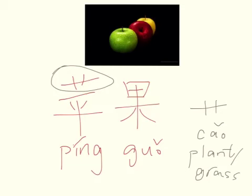Every time you see this little cross — it looks like a clown's eyes to me — every time you see this, you know it's fruit, vegetable, or plant related. 草. Please add the 不收 for 草 in your 笔记本.